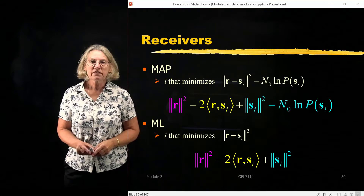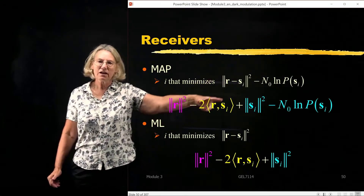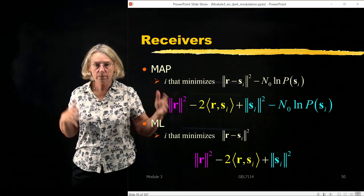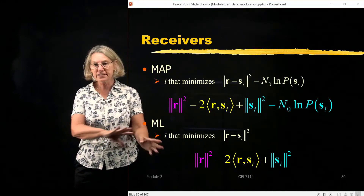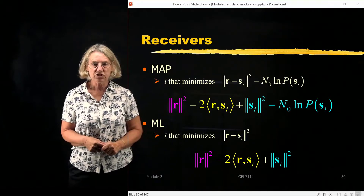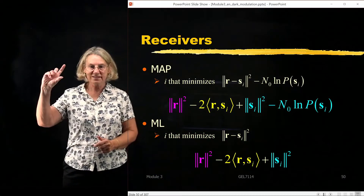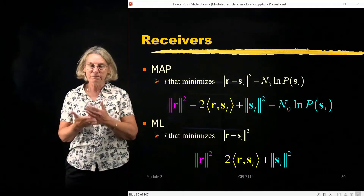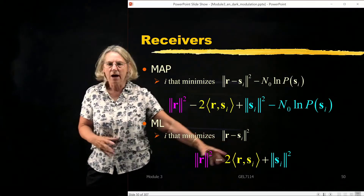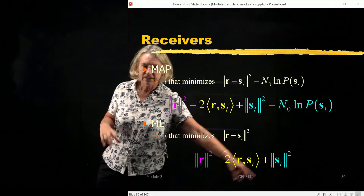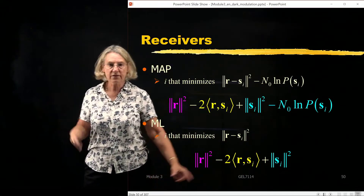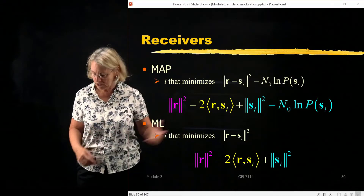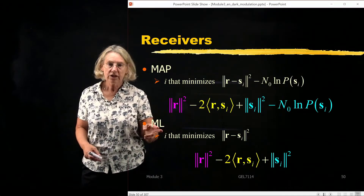We saw briefly earlier that we can take the signal space norm and break it down into an inner product and the norm squared of each one of the component vectors. In the maximum likelihood case, if we want to minimize the distance to find the symbol closest to the received vector, it's equivalent to minimizing three elements: the length of the received vector, the length of each symbol, and the inner product.